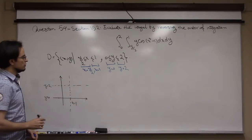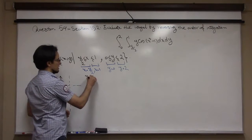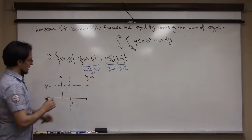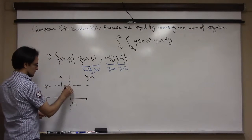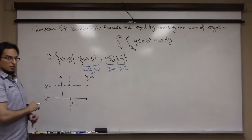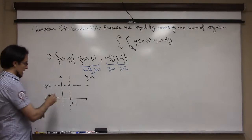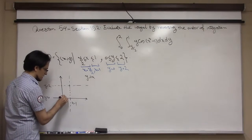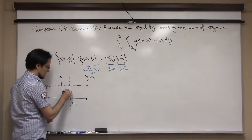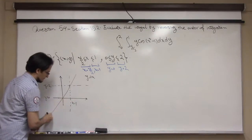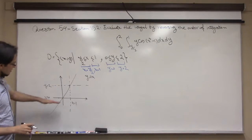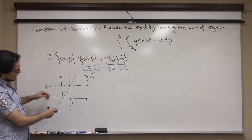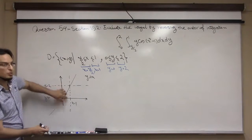The line x = y/2 is the same as y = 2x. If you plug in x = 1, y = 2, so it passes through that intersection and also through the origin. That is the diagonal boundary line.